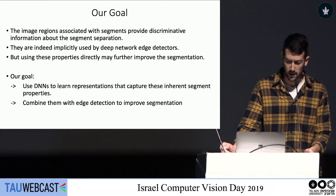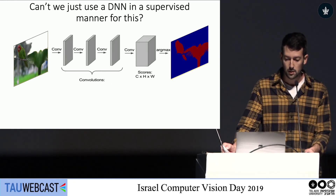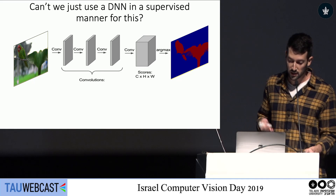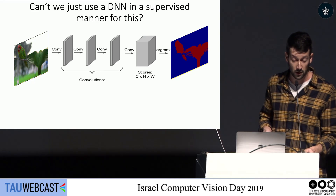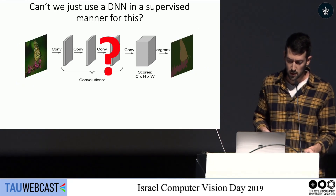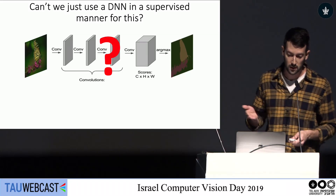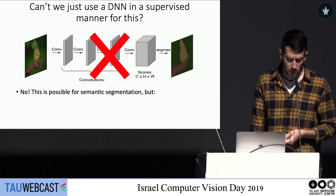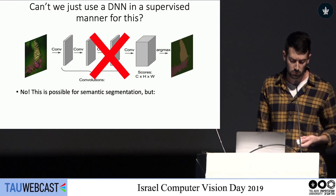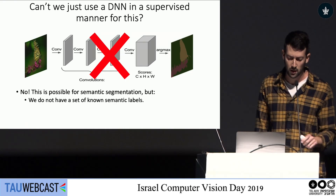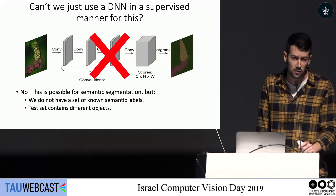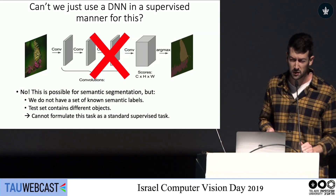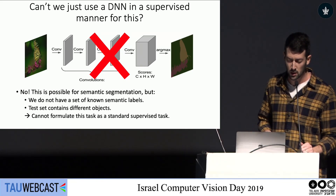This is achieved in semantic segmentation tasks where you can use object identity to learn region information directly. But can we use it for generic segmentation? We cannot formulate this as a supervised task because we don't have a set of known semantic labels for the training set, and the test set can contain totally different objects. So we need to figure out a different way to learn representations and use them in the segmentation process.